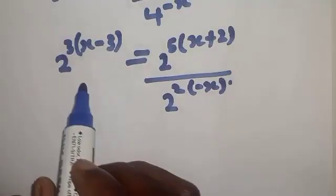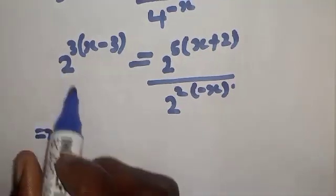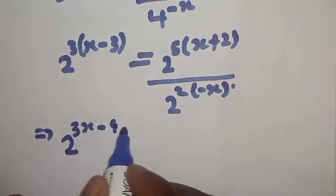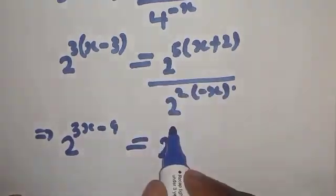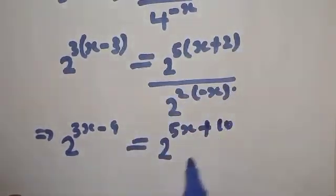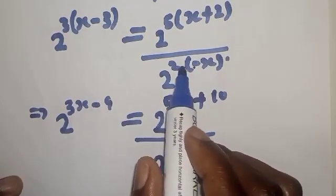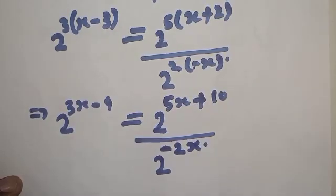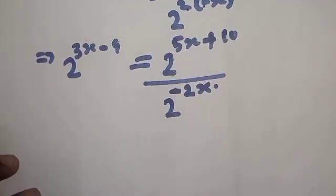Now let's open the brackets. We have 2 raised to power 3 times x minus 3, which gives 3x minus 9. On the right side, opening the bracket gives 2 raised to power 5 times x plus 2, which is 5x plus 10. In the denominator we have 2 raised to power 2 times minus x, giving minus 2x.